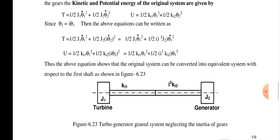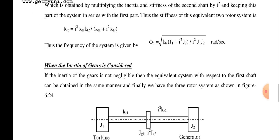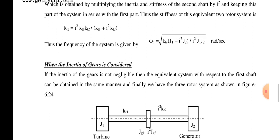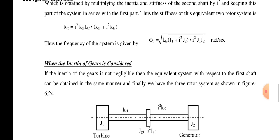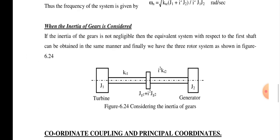For the equivalent turbo-generator gear system, the equivalent stiffness is obtained by multiplying the inertia and stiffness of the second shaft by i², keeping the system referenced to the first shaft. The equivalent stiffness is kt_eq = (i²·kt1·kt2) / (kt1 + i²·kt2). The natural frequency is then ωn = √[kt_eq · (J1 + i²·J2) / (i²·J1·J2)], in radians per second.